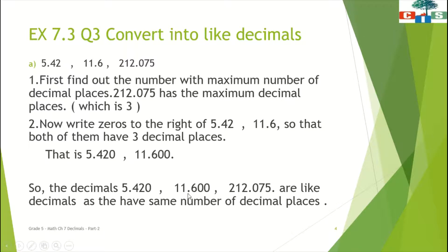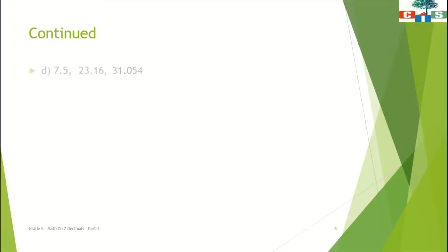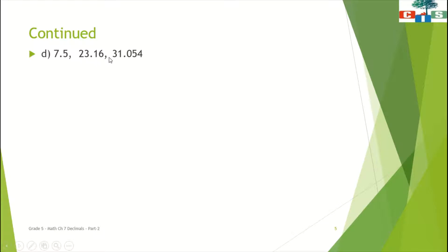Here we have 3 decimal places, here also 3, and here also 3. Now we will see one more sum — sum number D. B and C you have to do by yourself. The sum we have is: 7.5, 23.16, and 31.054.